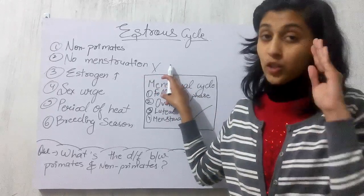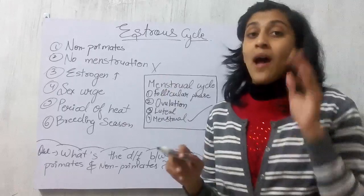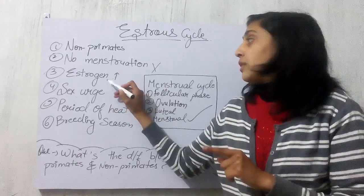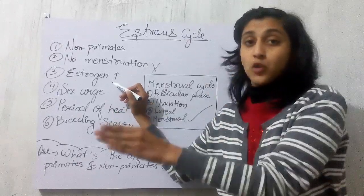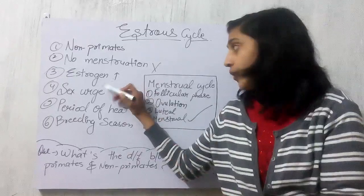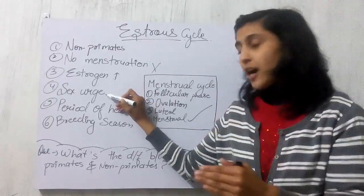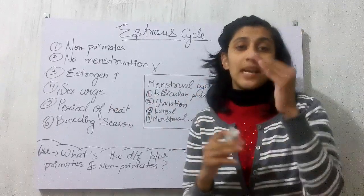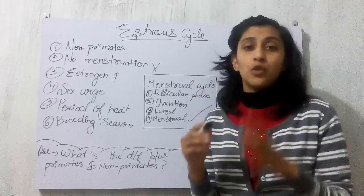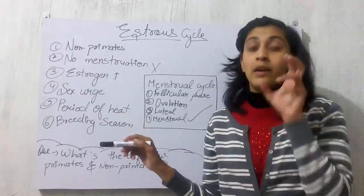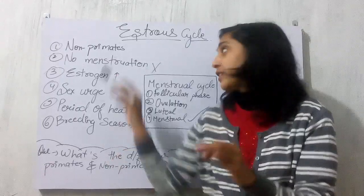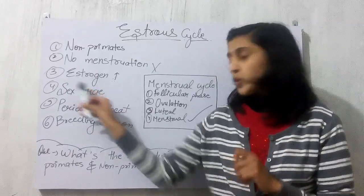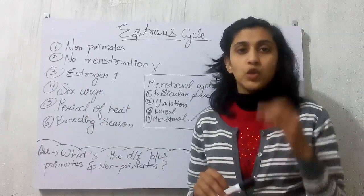The biggest difference is that at the end of the estrous cycle, there is no menstrual bleeding and no blood flow. In the estrous cycle of non-primates, the level of estrogen and hormones associated with sex urge or desire will increase, initiating the sex urge inside the body of the female. This phase, when estrogen level increases, is known as the period of heat, which essentially happens in non-primates.